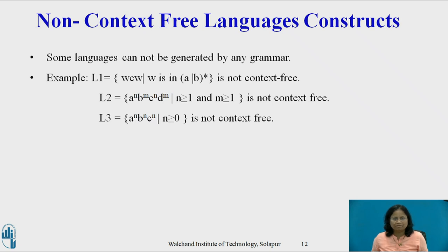L2 = {a^n b^m c^n d^m | n,m ≥ 1} is not a context-free language. L2 consists of strings in the language generated by the regular expression a*b*c*d* such that the number of a's equals the number of c's and the number of b's equals the number of d's. L2 abstracts the problem of checking that the number of formal parameters in a procedure declaration agrees with the number of actual parameters in a use of that procedure.